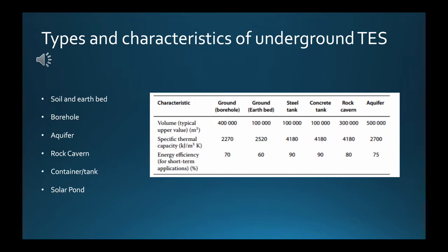A rock cavern can be filled with a storage medium and used as a TES. The storage medium in such systems depends on the ability of the cavern to hold it, and such TES systems are usually large. Containers and tanks filled with a heat storage medium such as water or rock can also act as TES. Container and tank-based TES types can be located in or above ground, but because they are often large and the ground provides insulation, they are often placed underground. Such tanks are often made of steel or concrete because of their physical characteristics, costs, availability, and easy processing, and can be used for new and old buildings.